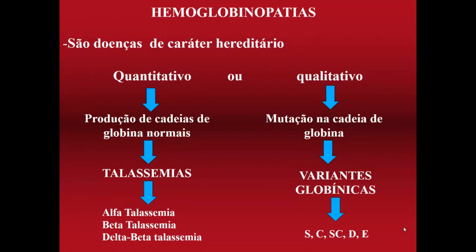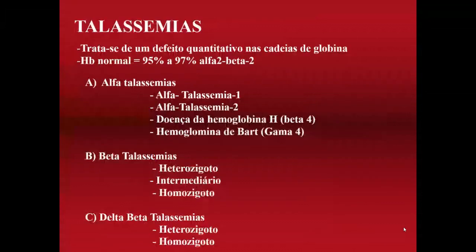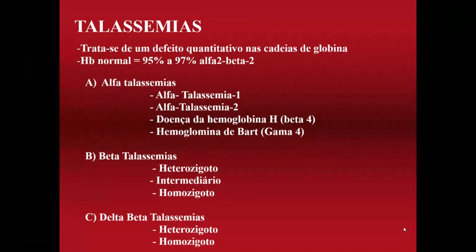As duas principais são alfa e beta, e vamos fazer a discussão desses dois problemas quantitativos da talassemia. O diagnóstico genético é muito importante nos casos de talassemia, principalmente a alfa. Por isso, sempre falo um pouco sobre o que pode causar essas talassemias.